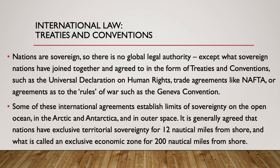Since nations are sovereign, there is no one global legal authority, other than what sovereign nations have joined together and agreed to in the form of treaties and conventions — like the Universal Declaration of Human Rights, trade agreements like NAFTA, or agreements as to the rules of war, like the Geneva Convention. Some of these international agreements also establish limits of sovereignty on the open ocean, in the Arctic, in Antarctica, and in outer space.